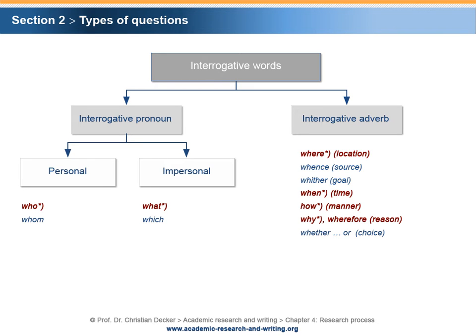Whether or is used in the case of a question related to a choice. The interrogative words in bold — namely who, what, where, when, how, and why — are sometimes referred to as the five W's and one H, or in some cases as the six W's.